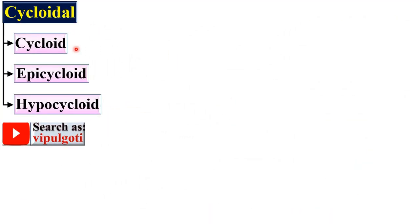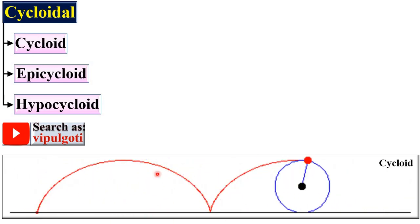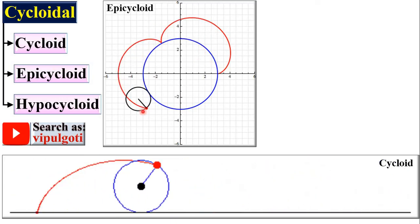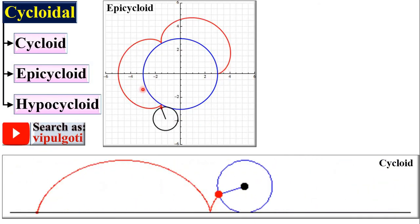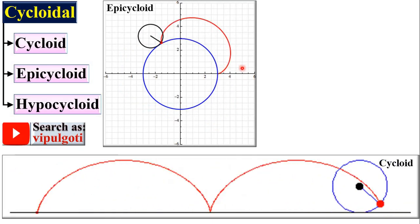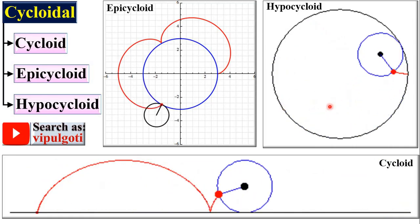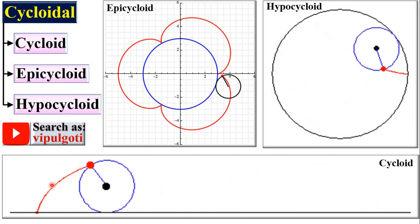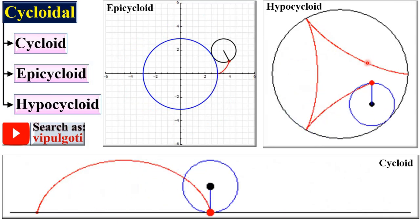The next group is the cycloidal group. The first is the cycloid — if a rolling circle rolls on a straight line, it will generate the cycloid. Next, the epicycloid — if the rolling circle rolls on another circle, it generates the epicycloid. And if the rolling circle rolls inside another circle, it generates the hypocycloid. Here the red color shows the cycloid, the epicycloid, and the hypocycloid respectively.